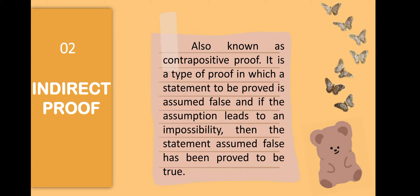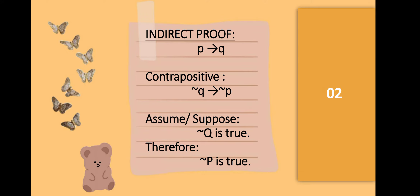Let's proceed with indirect proof. It is also known as contrapositive proof. It is a type of proof in which a statement to be proved is assumed false, and if the assumption leads to an impossibility, then the statement assumed false has been proved to be true. For direct proof we had if P then Q, but for contrapositive proof the symbol before Q is the symbol for negation, so we place the word 'not' in the statement. Contrapositive is read as: if not Q, then not P. We assume that not Q is true, therefore not P should also be true.